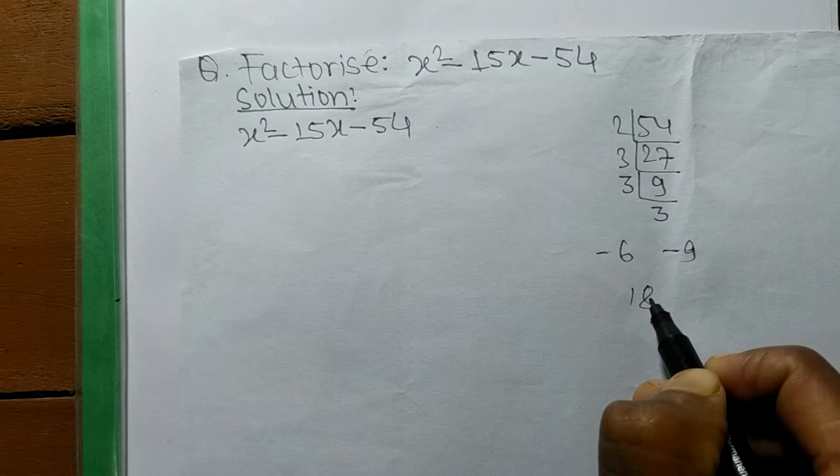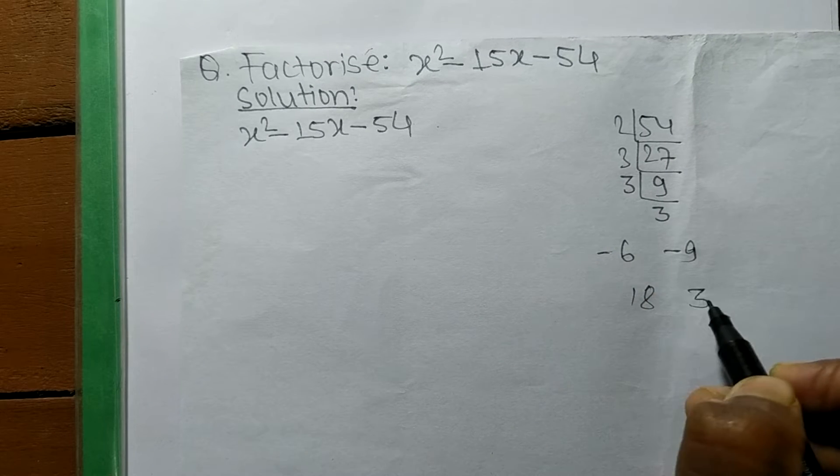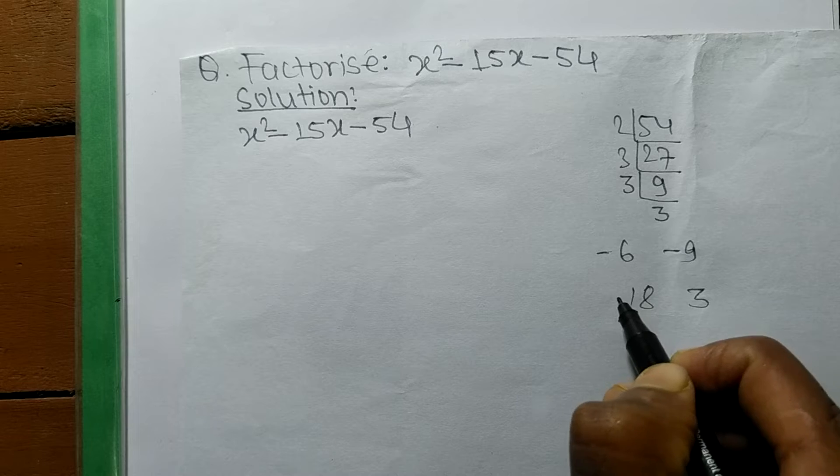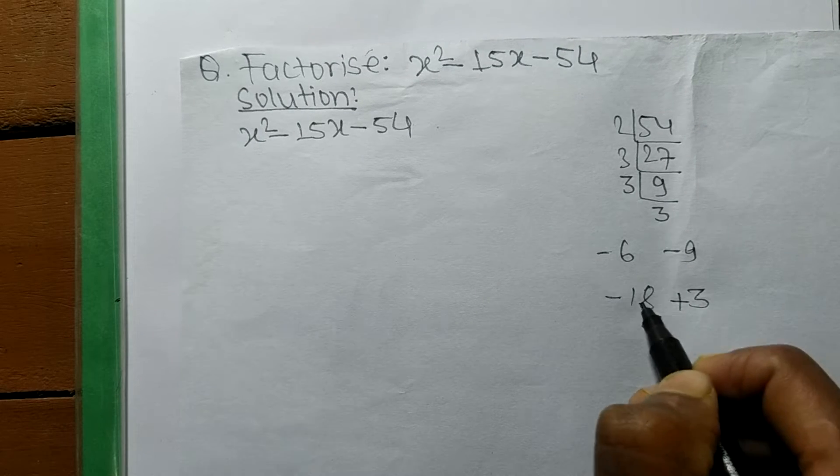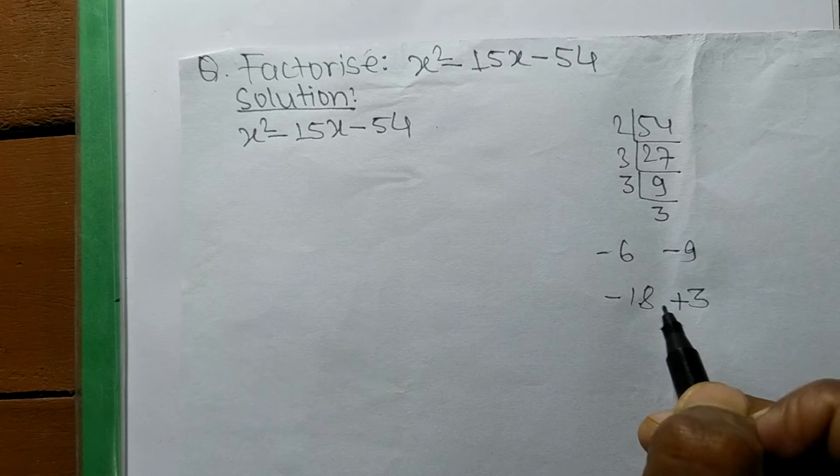So -18 plus 3 equals -15, and 18 times 3 equals 54. This gives us the correct middle term of -15.